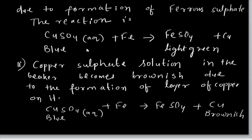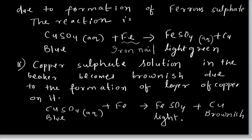Here the reaction is: copper sulphate (blue colour) when treated with iron — Fe, the iron nail — dipped in copper sulphate solution gradually changes the solution to light green, which is ferrous sulphate (FeSO₄). The copper sulphate solution in the beaker becomes brownish due to the formation of a layer of copper on the nails. So, ferrous sulphate (light green) and copper metal (brown) are produced. These are the colours: ferrous sulphate is light green and copper is brown.